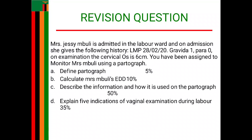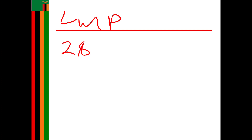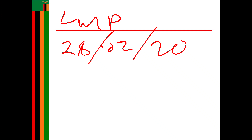Question B is saying calculate Mrs. Mboli's EDD. From the scenario, it's saying that Mrs. Mboli has the LMP of 28/02/2020. So to calculate the EDD, the first thing that you need to do is add plus 7, which indicates 7 days because we only have 7 days in a week. So to the number of days, which is 28, you need to add plus 7.